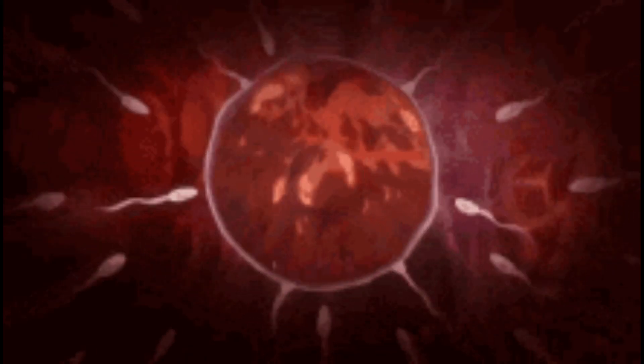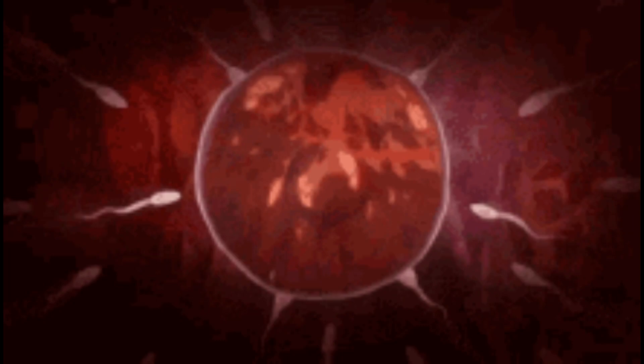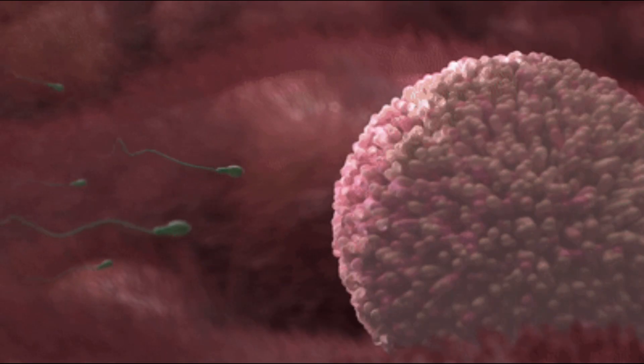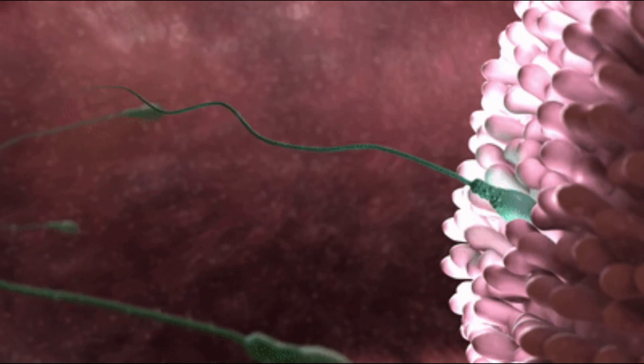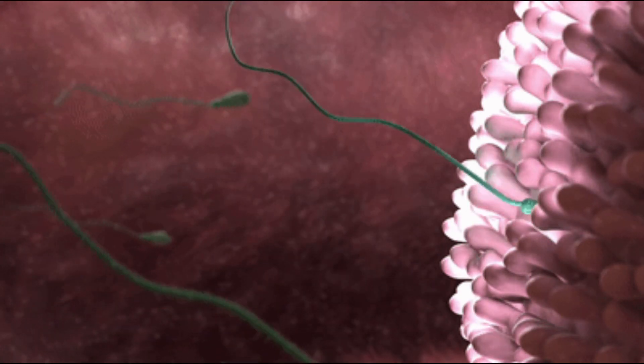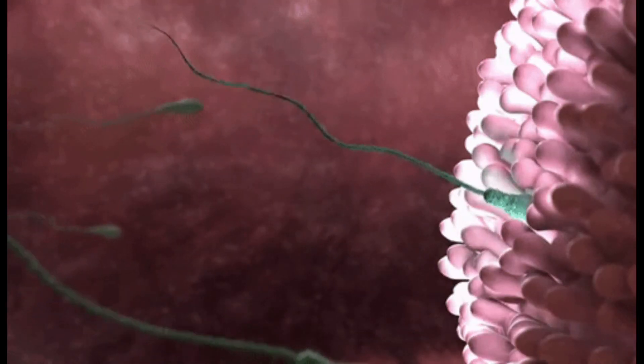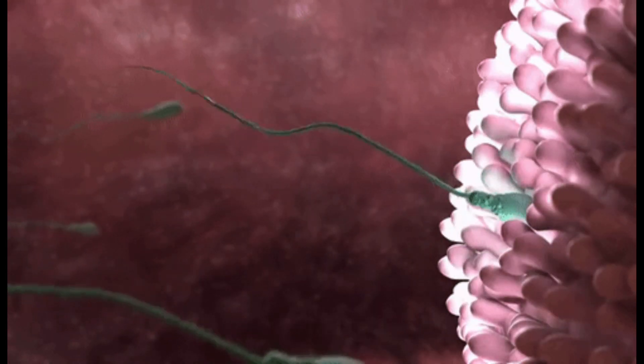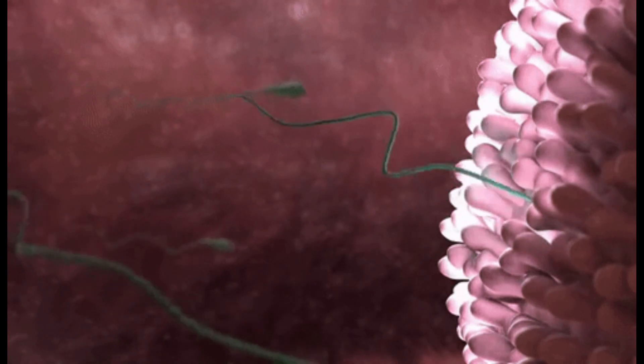However, there are two barriers surrounding the egg. The only way to pass through the first barrier is for the sperm to become hyperactive and push through to get to the second barrier called the zona pellucida. To pass through this barrier, the sperm must undergo a process called acrosome reaction.